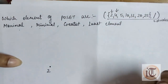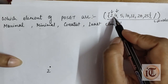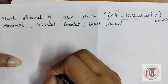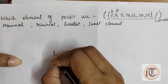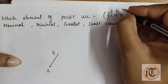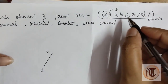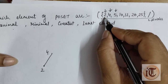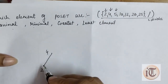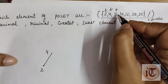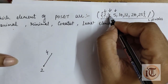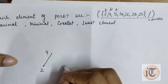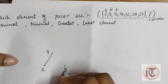The next element is 4. We check whether 4 is fully divided by 2 — yes — so 4 is connected to 2. The next element is 5. We check whether 5 is fully divided by 2 — no. We check whether 5 is divisible by 4 — no. This means element 5 is an independent element, so it stands on its own.